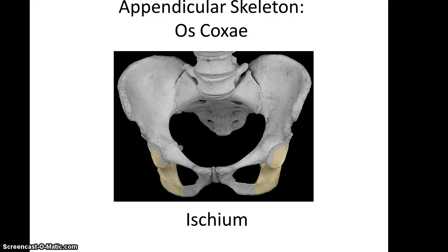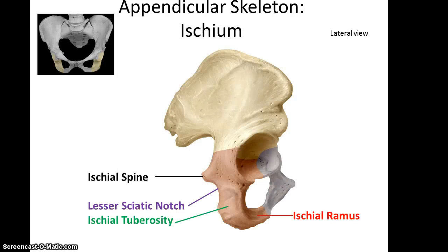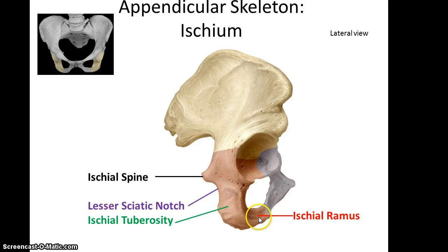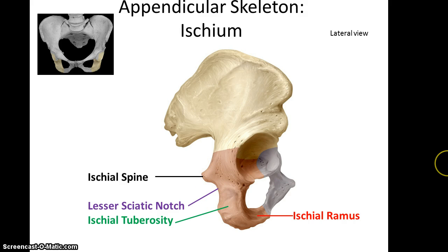The ischium is inferior to the ilium. In a lateral view, you have the ischial spine, the lesser sciatic notch below that, then the ischial tuberosity which is a flat area that's a little bit thicker, and then the ischial ramus, which is articulating with the pubis bone. Note how they all line up: the posterior superior iliac spine becomes the posterior inferior iliac spine, which becomes the greater sciatic notch, which becomes the ischial spine, which becomes the lesser sciatic notch.